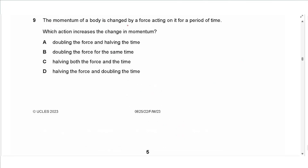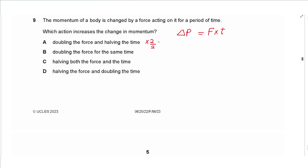Question 9: the change in momentum equals force multiplied by time. Doubling the force and halving the time gives no net change (×2 then ÷2 = ×1). Doubling the force for the same time doubles the change in momentum. Halving both force and time decreases it. Halving force and doubling time also gives no effect. So the answer is B.